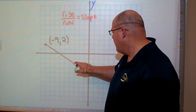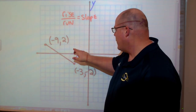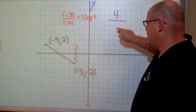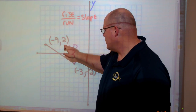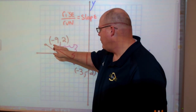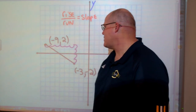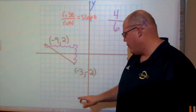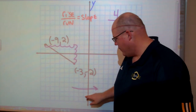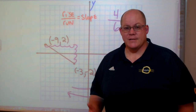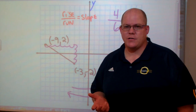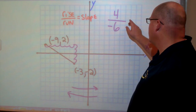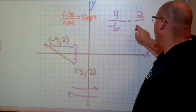Let's see how many I rise: 1, 2, 3, 4. So my rise is 4. Let's check our run: 1, 2, 3, 4, 5, 6. Now, which direction did we run — to the right or to the left? We ran to the left. So would that be a positive run or a negative run? Negative. So it's 4 over negative 6. This would simplify down to 2 over negative 3.